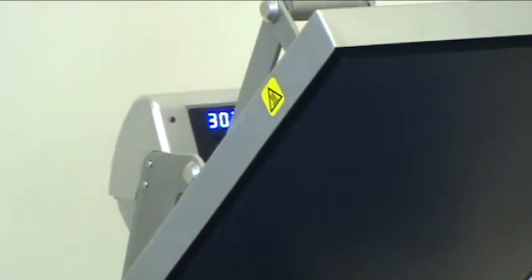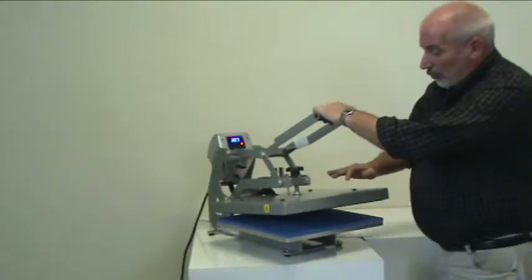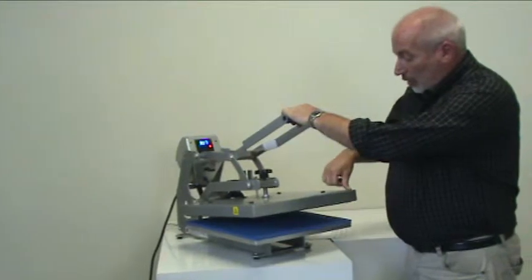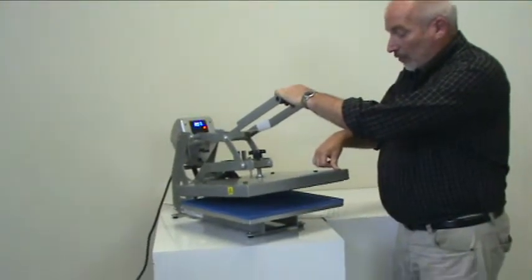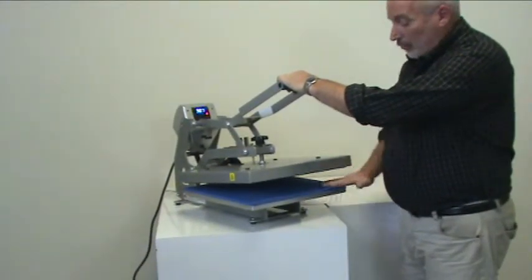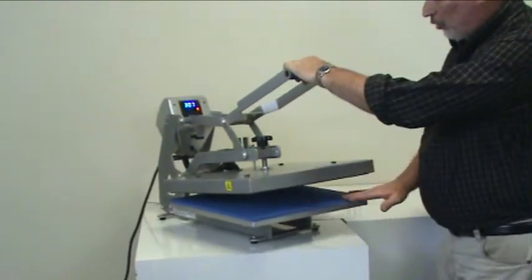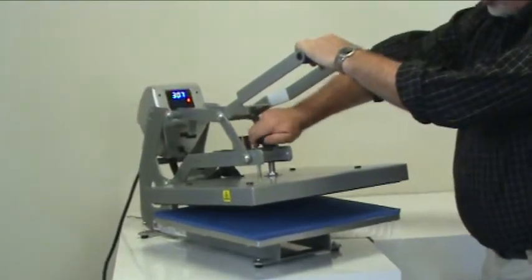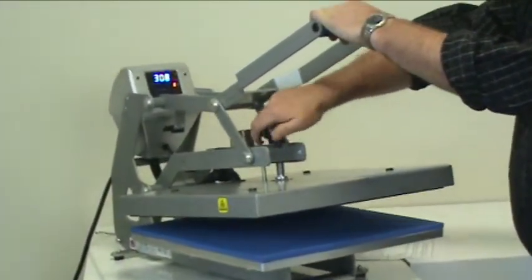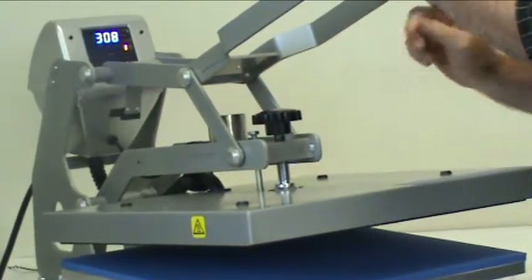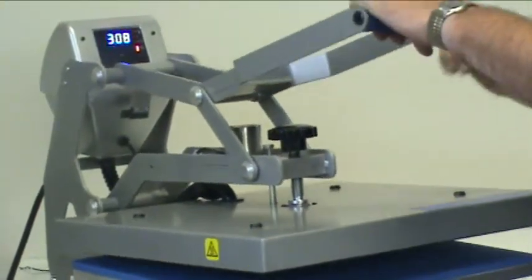As far as pressure goes, we have an upper flotational platen that I mentioned earlier. This is free-floating and allows for even pressure throughout, so you have the same pressure on each corner of the press. We simply adjust it by turning this over-the-center pressure adjustment on the top. When I lock this down...